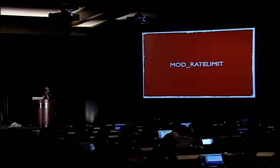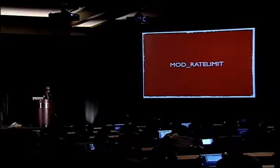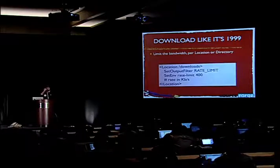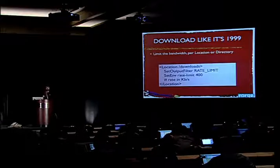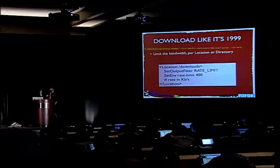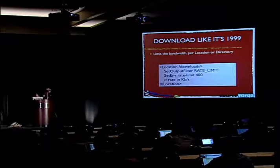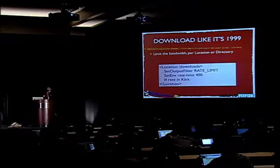mod_ratelimit answers a question we get all the time on the IRC channel: people want to slow down throughput for a particular part of their website. The scenario is: I have a downloads directory and people are downloading so much from it that it's consuming all my bandwidth and the rest of my site is inaccessible. mod_ratelimit addresses this by slowing down bandwidth consumption for that particular directory — in this case to 400 kilobits per second — so that the rest of the website does not suffer.